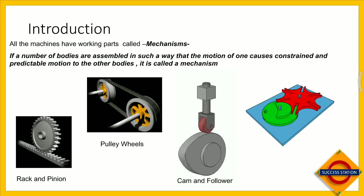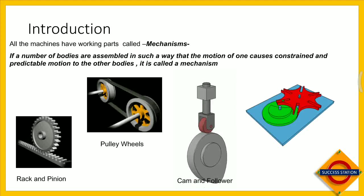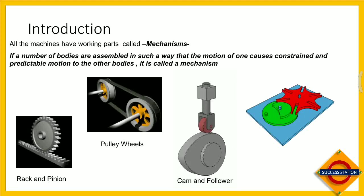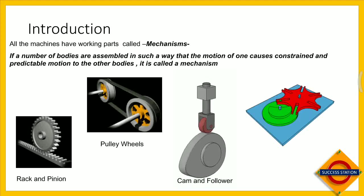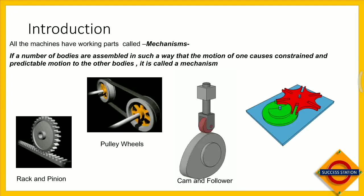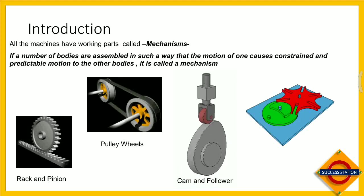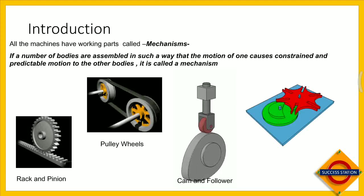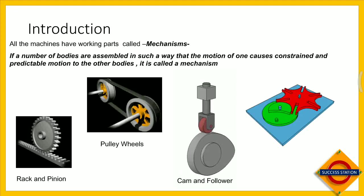For example, in a cam and follower: the cam rotates and the follower follows it. The cam has rotary motion, but the follower does not rotate — it performs reciprocating (up and down) motion. This happens because of the way they are assembled. Similarly, pulleys rotate, rack and pinion have a different arrangement — so mechanism means bodies assembled so that motion of one causes constrained and predictable motion in others.